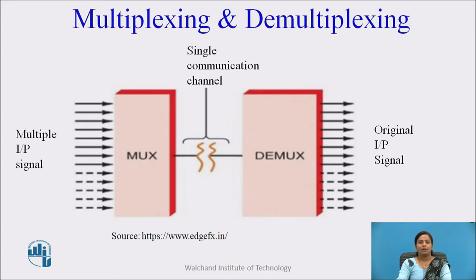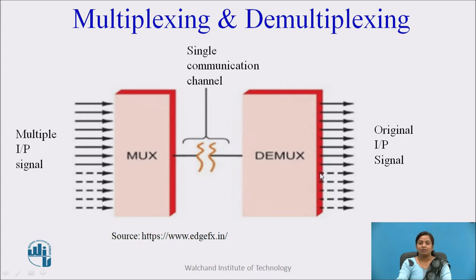Let us see multiplexing and demultiplexing. Multiplexing is the technique by which we can transmit a number of input signals over a single communication channel. The multiplexer device is present at the transmitter side. Demultiplexing is the technique where the multiplexed signals are recovered separately, and the demultiplexer device is present at the receiver side.